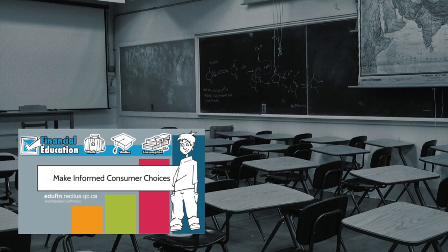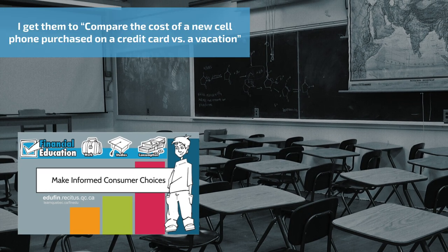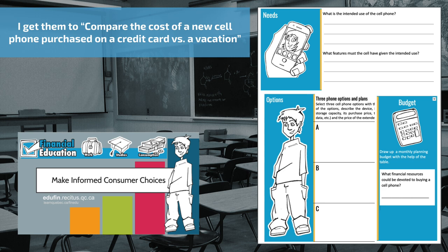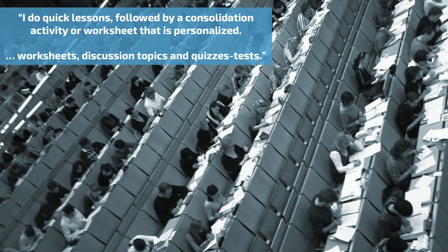It's important that students are equipped to make informed consumer choices. I get them to compare the costs of a new cell phone purchased on a credit card versus a vacation. This chapter focuses on the cell phone — why people need them and how much they really cost depending on the plan you choose. I do quick lessons followed by a consolidation activity or worksheet that is personalized.